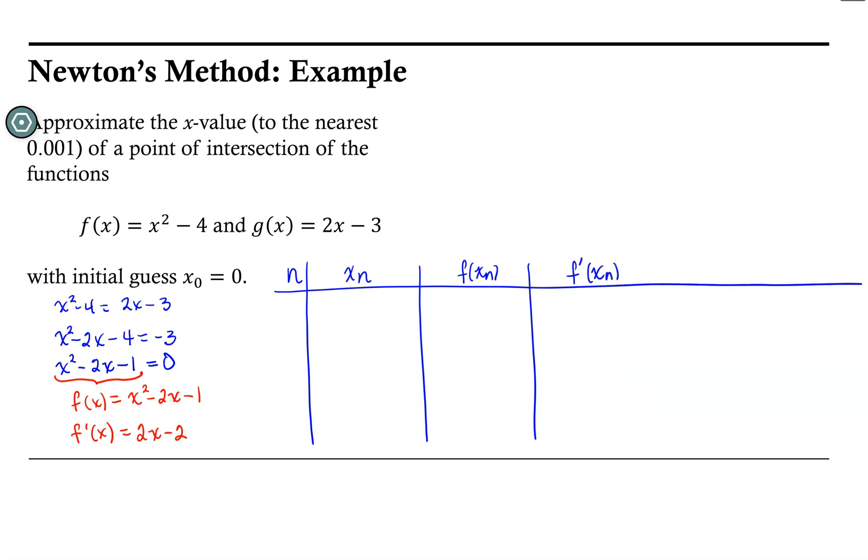And then lastly, what our next approximation will be using this previous information. That is, our next approximation will be the previous approximation minus f(xₙ) divided by f'(xₙ).